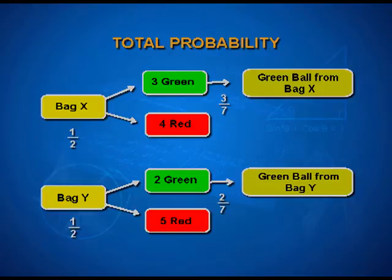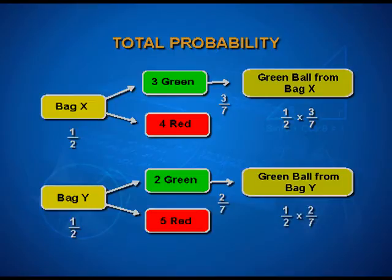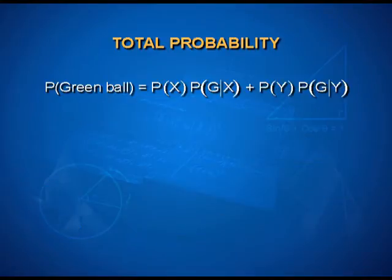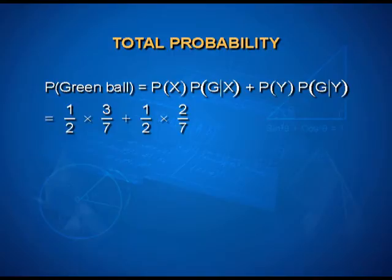What we have learned earlier is the multiplication theorem, which tells us that the probability of a green ball from bag X is the product of the probability of bag X and the probability of green given that bag X has been selected. So it is 1/2 into 3/7. Similarly, green from bag Y is 1/2 into 2/7. Therefore, the probability of a green ball — using X to represent bag X being selected — becomes P(X) × P(green|X) plus P(Y) × P(green|Y), giving a total answer of 5/14.